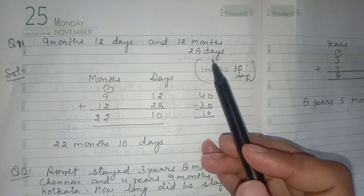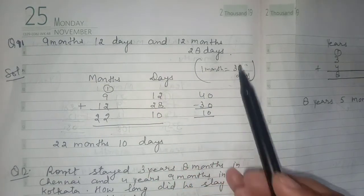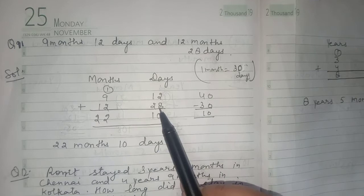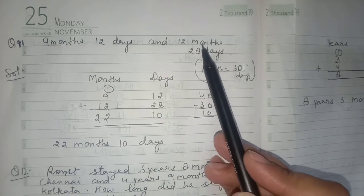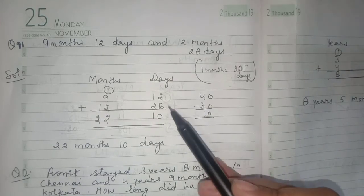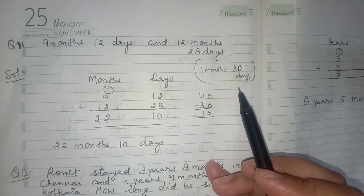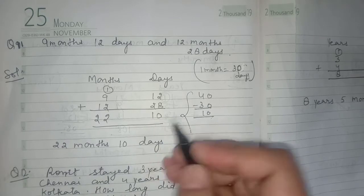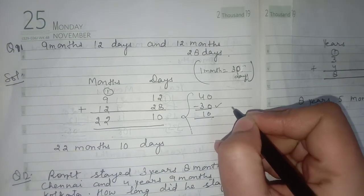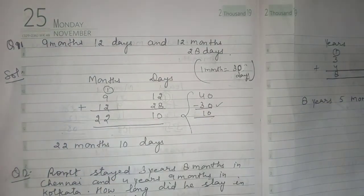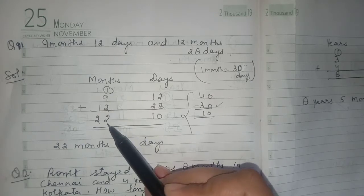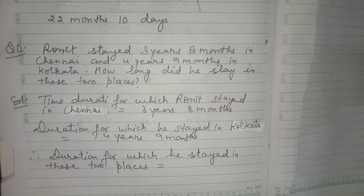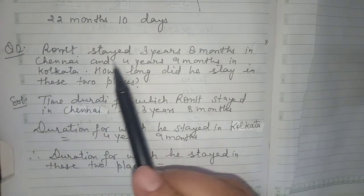Next is number 11: 9 months 12 days and 12 months 28 days. We are adding months and days, and 1 month equals 30 days. Write months and days on top. Put values: 9 months 12 days and 12 months 28 days. Add days: 12 plus 28 is 40, more than 30 — subtract 30 to get 10. Write 10 under days; carry 1 month. 9 plus 1 is 10, plus 2 is 12; carry 1, then 1 plus 1 is 2. Answer: 22 months 10 days.